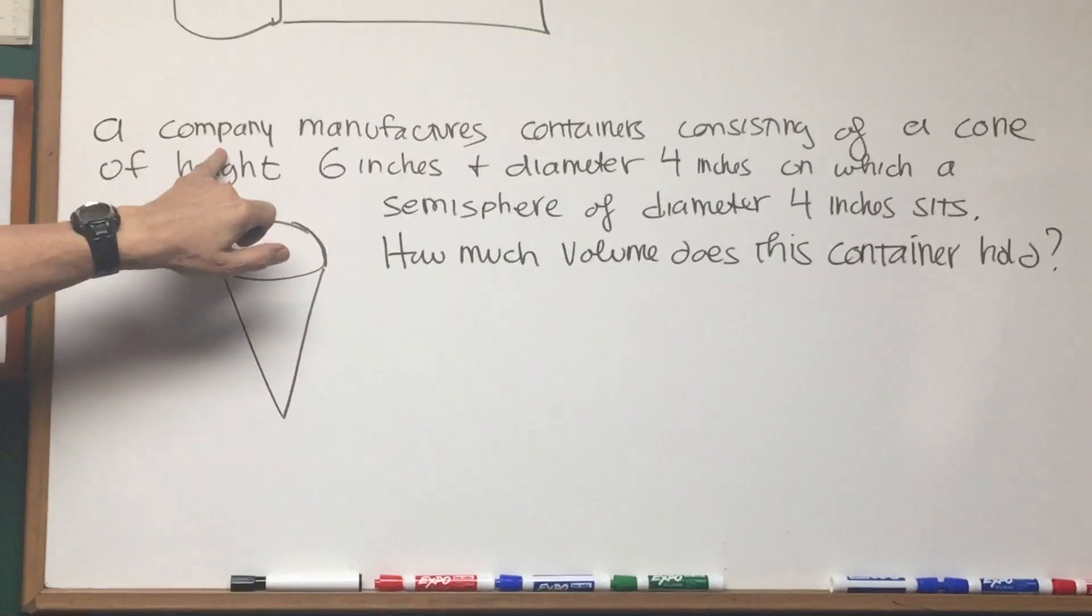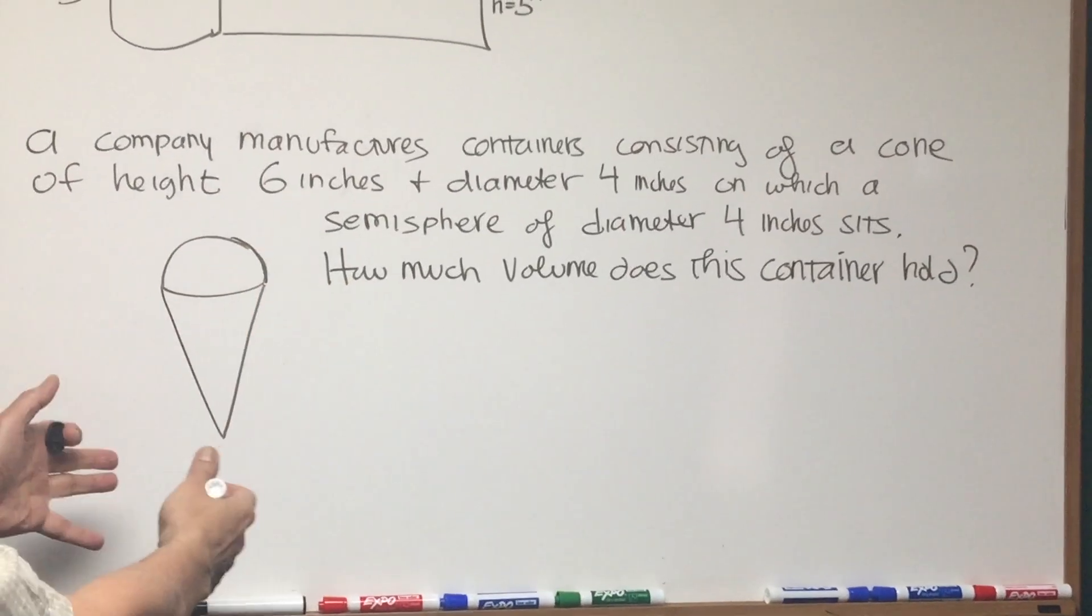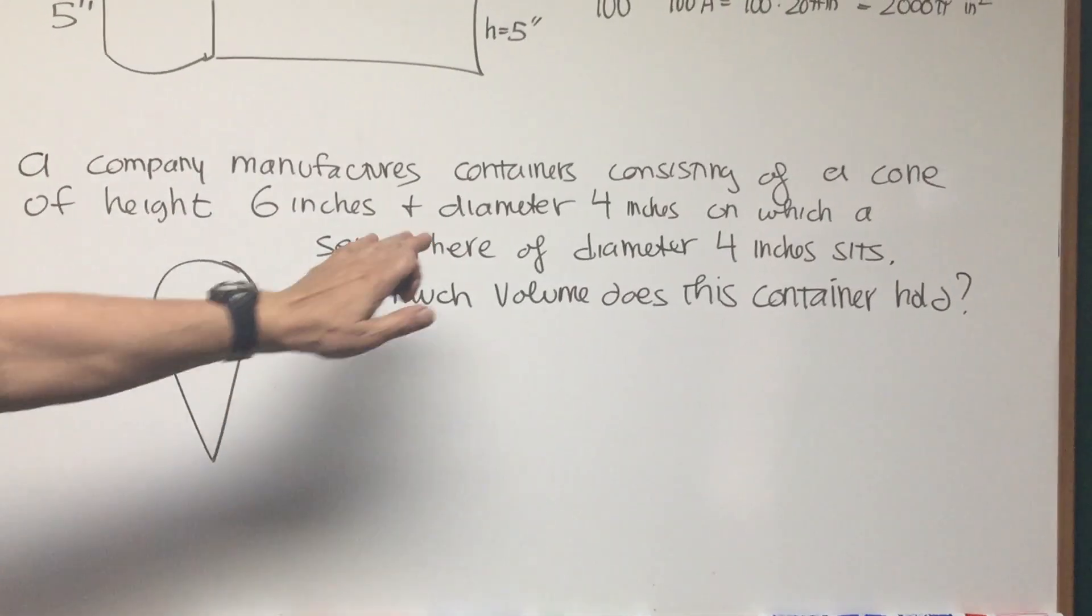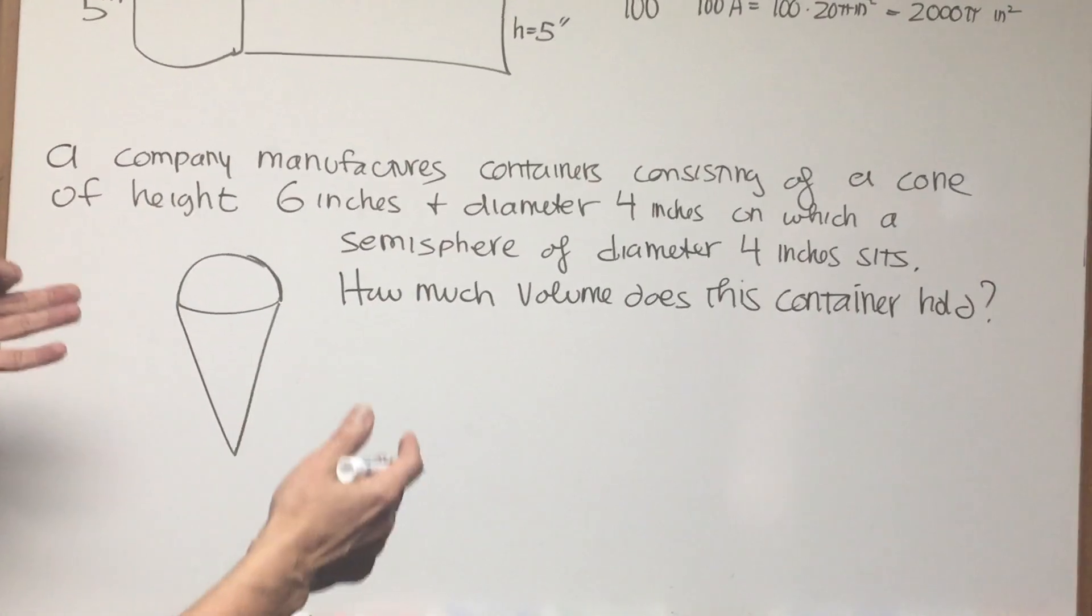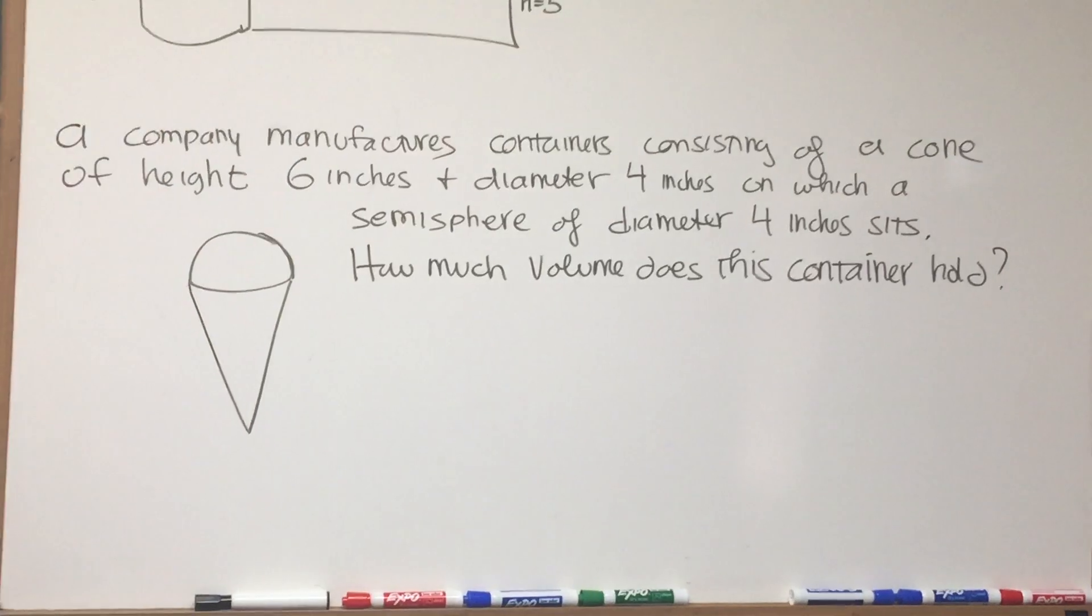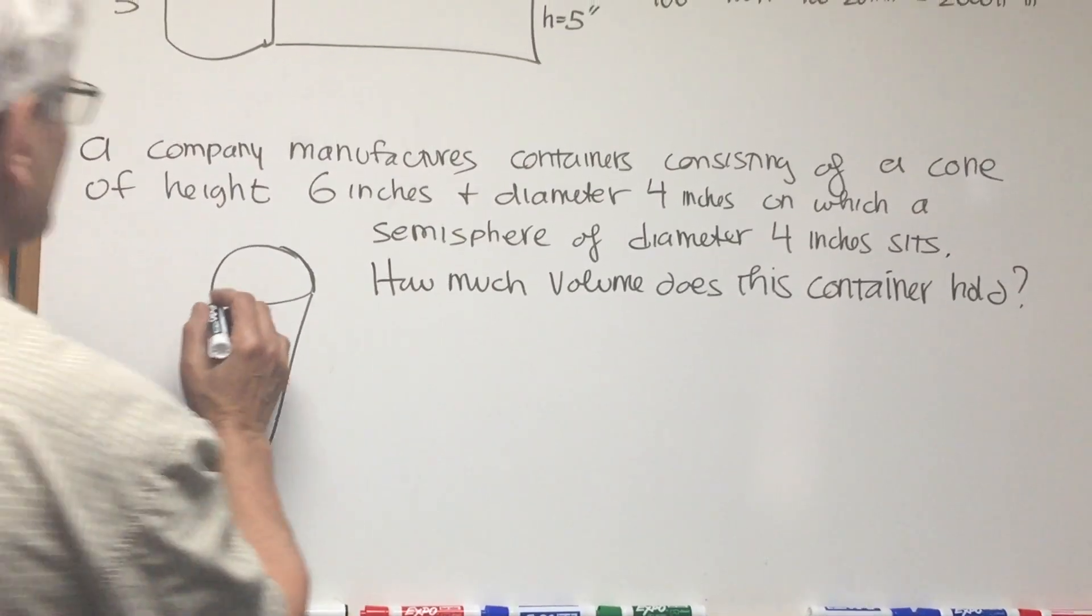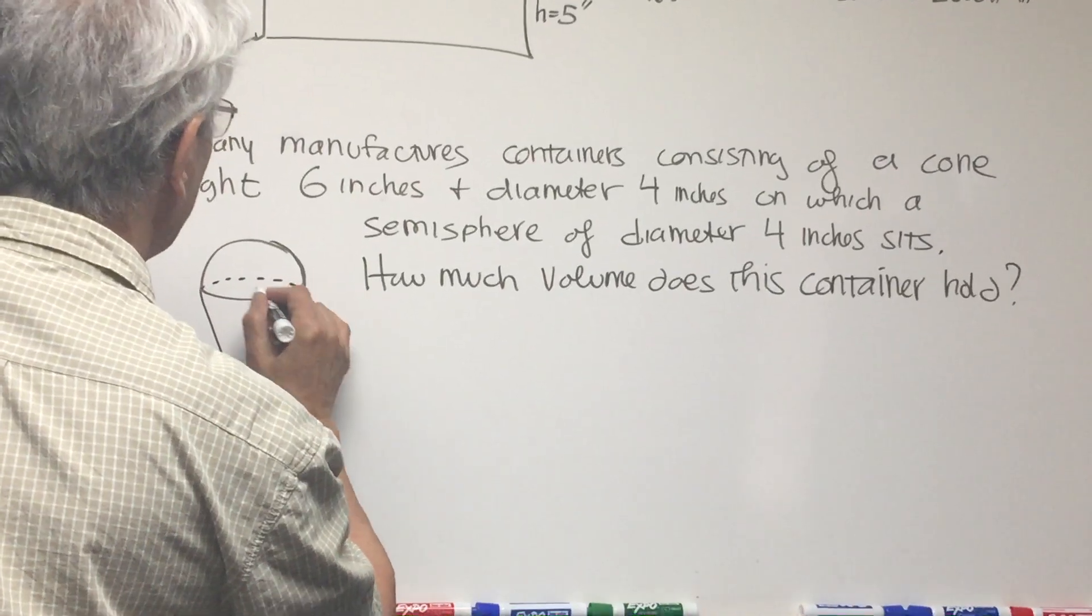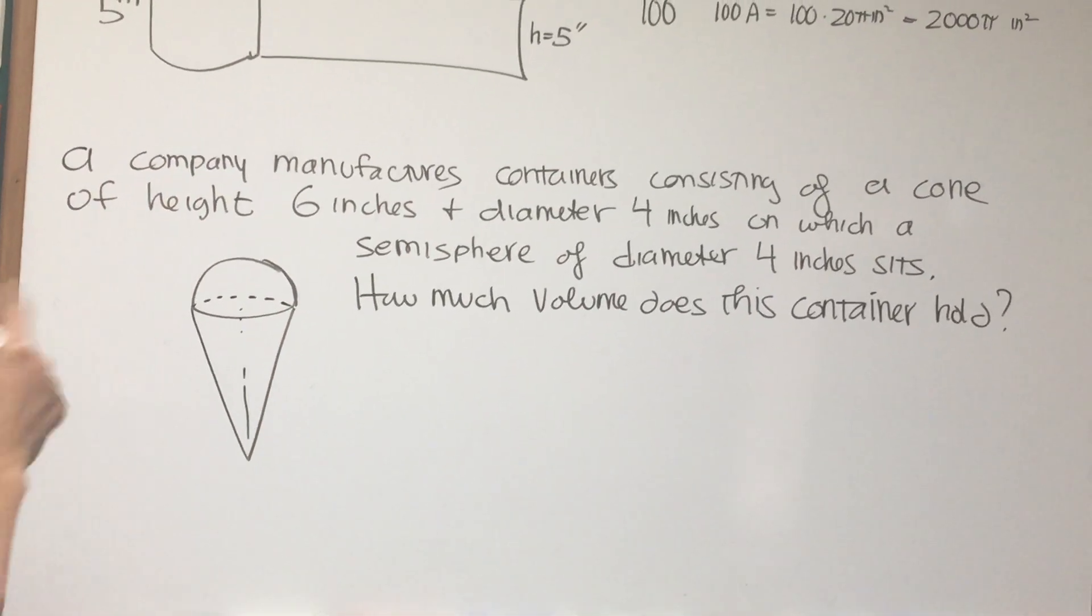Yes, let's go to this next problem. A company manufactures containers consisting of a cone of height 6 inches and diameter 4 inches, on which a hemisphere of diameter 4 inches sits. So it's modeled to look like an ice cream cone. How much volume does this container hold? So they may want to fill it with soda pop or something like that. So let's just first consider the volume, let's consider the cone.